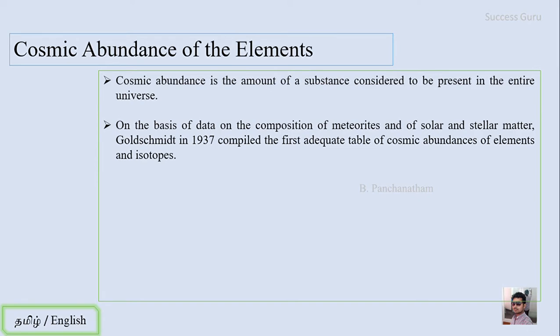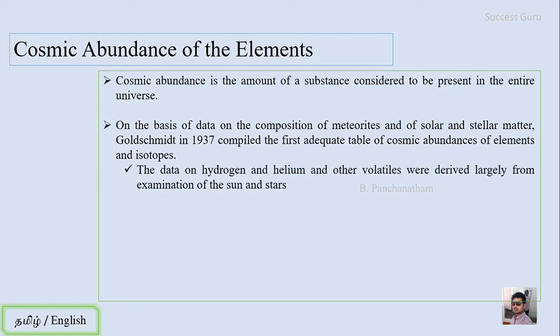On the basis of data on the composition of meteorites and of solar and stellar matter, Goldschmidt in 1937 compiled the first adequate table of cosmic abundances of elements and isotopes. The data on hydrogen and helium and other volatiles were derived largely from examination of the sun and stars.